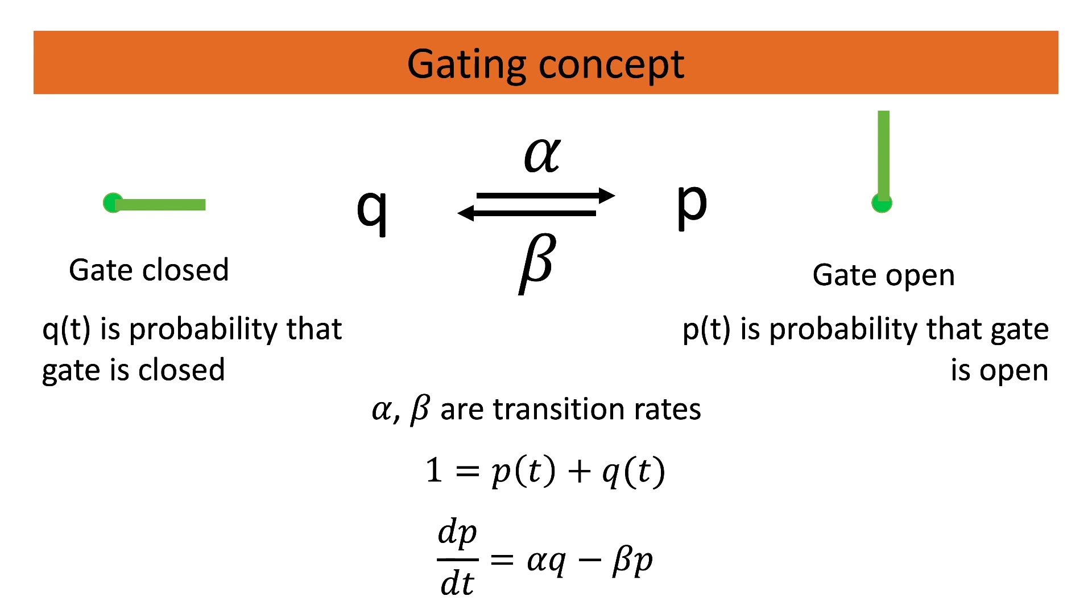In the last step we want to have the dependence from only one variable and we choose P here. So in the upper equation we can rewrite Q as 1-P, and we arrive at this formulation. These are the basic formulations describing a single gate.